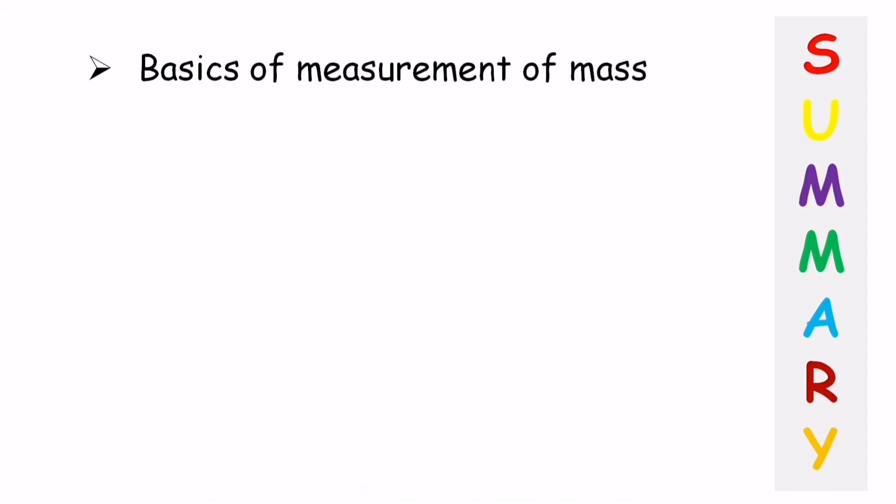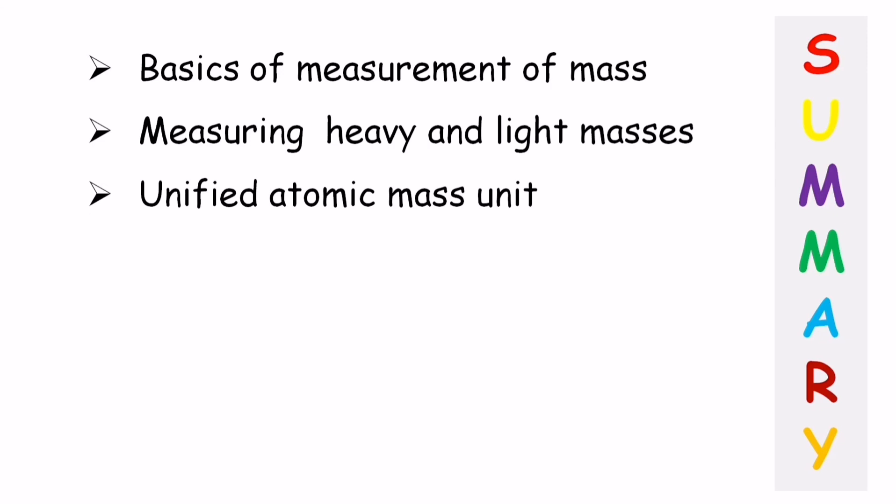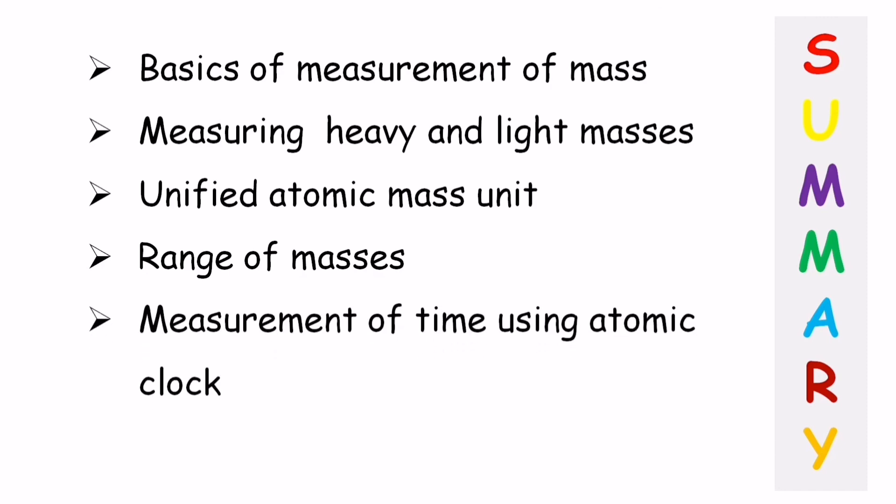So now that we are done with mass and time, let's quickly summarize what we have learned in today's video. First, we talked about the basics of measurement of mass, how it is measured using normal balances, and how you use chemical balances to measure chemicals in the laboratories. Then we talked about measuring heavy masses using Newton's laws, and then we talked about light masses measurement using a mass spectrograph. We also talked about unified atomic mass unit and how we have taken 1/12th the mass of one carbon-12 atom. Then we discussed some range of masses which varies over an order of 10^85. We also talked about measurement of time using an atomic clock, caesium-133 atom, and the range and order of time interval, which is again 10^41 orders. So that's it for today's video. Until the next one, have a good day.